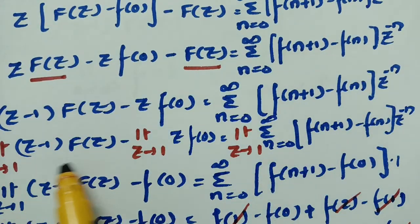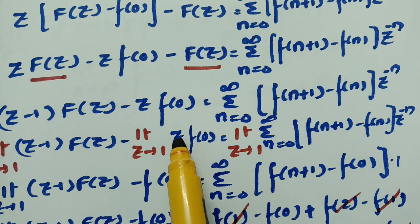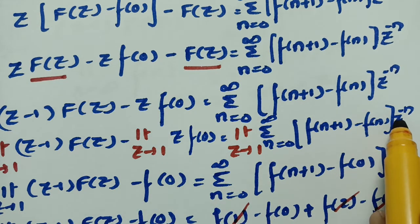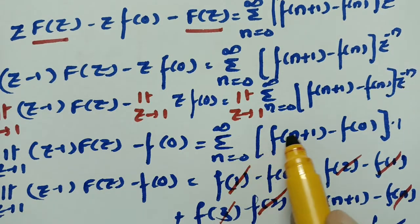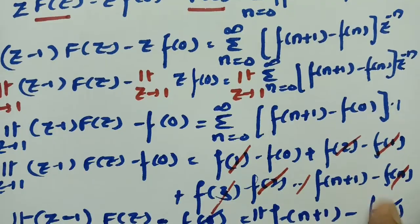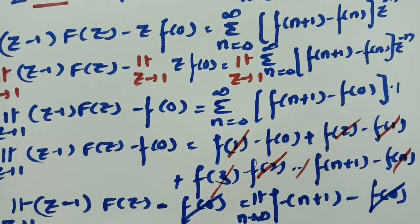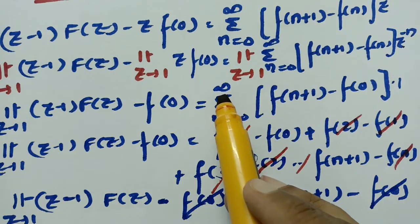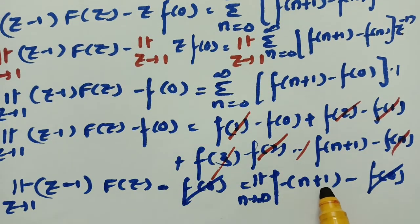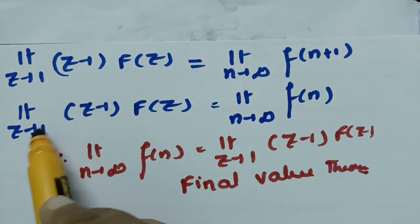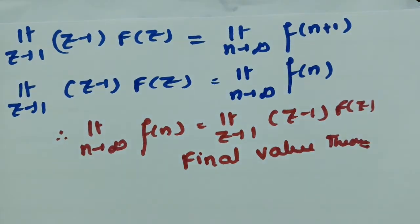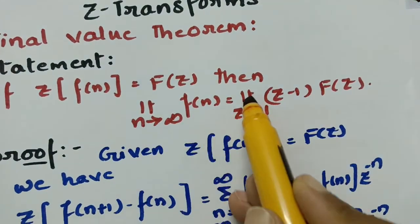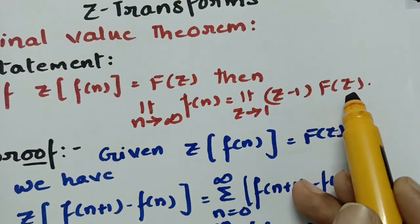Taking F(z) common gives (z minus 1) times the same summation. Taking the limit z tends to 1 throughout the equation: keeping z equals 1 gives F(0), and the z to the power minus n terms become 1. Substituting all n values, everything cancels and what remains is f(n+1) minus f(0). So the final result is: limit z tends to 1 of (z minus 1) into F(z) equals limit n tends to infinity of f(n).